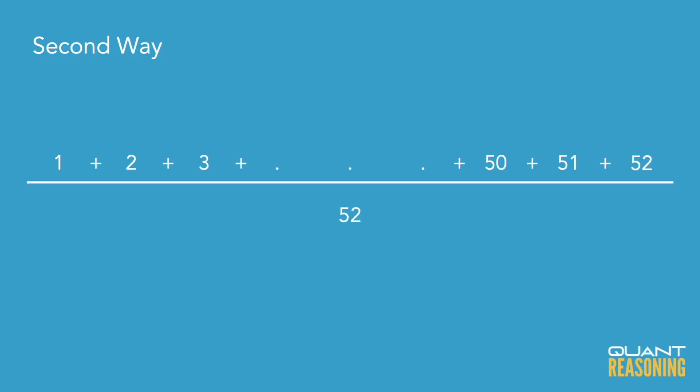The other good way to get there is to think about the definition of the word average. Average is defined as the ratio of the sum to the number of terms. We know the number of terms — there are 52 of them — and we can figure out the average. The average of an arithmetic sequence, also known as an evenly spaced set, is just going to be the average of the extremes.